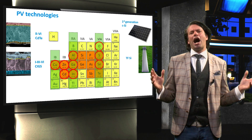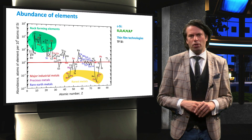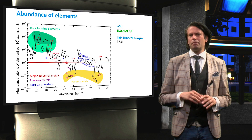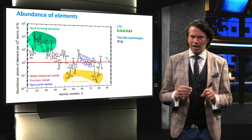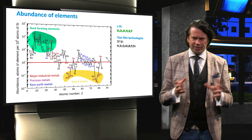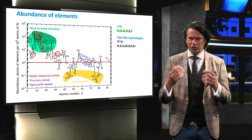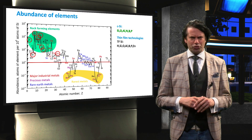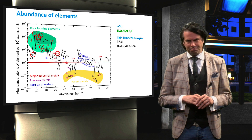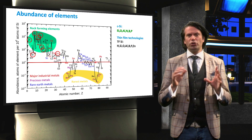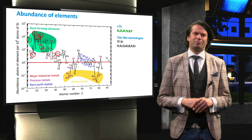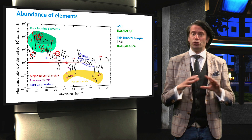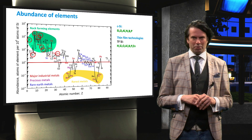So how about the elemental abundance of these technologies? Thin film silicon makes use of the same elements as crystalline silicon, with the addition of zinc, which is a major industrial metal, and hydrogen, the most abundant element in the universe. As we can see, thin film silicon uses no rare or toxic elements.